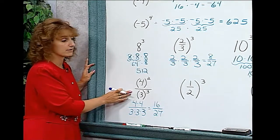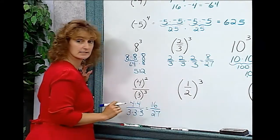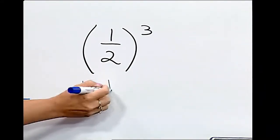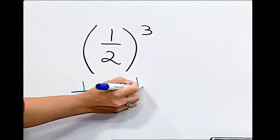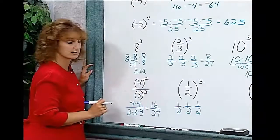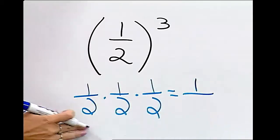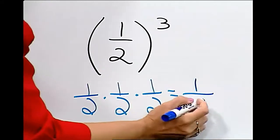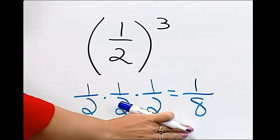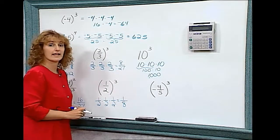Compare this to our next example, where the entire fraction is once again in parentheses: one-half to the third power means one-half times one-half times one-half. 1 times 1 times 1 is 1, and 2 times 2 times 2 is 8. So one-half to the third power equals one-eighth.